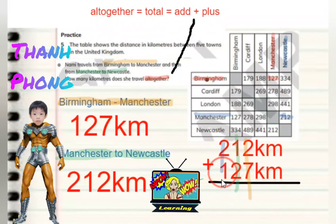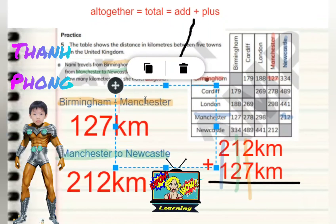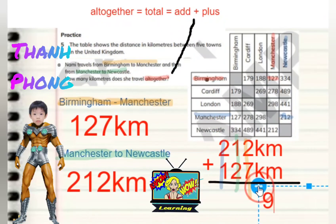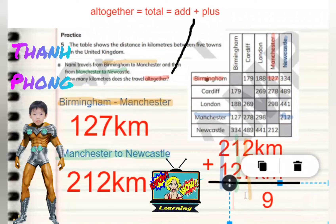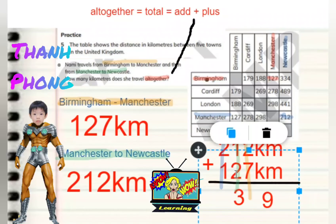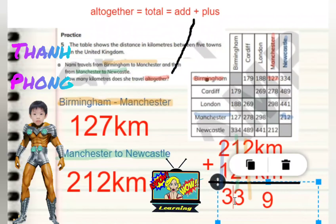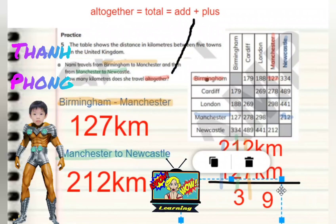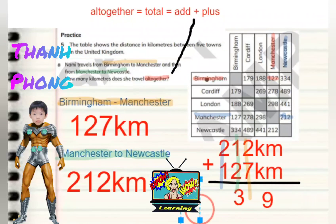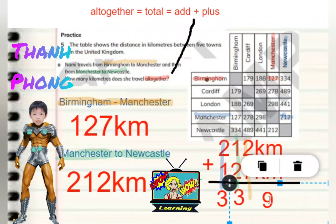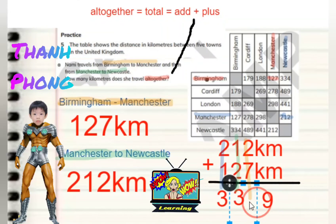Well done — this is what we need to remember. What's 2 plus 7, Tang Fong? 9. Well done, it's 9. What about 1 plus 2? It's 3. And the hundreds: 2 plus 1 is also 3. The hundreds and the tens are both threes, so we put the threes in as well. So what is our answer there, Tang Fong? 339. Yes, so that is our answer — 339.